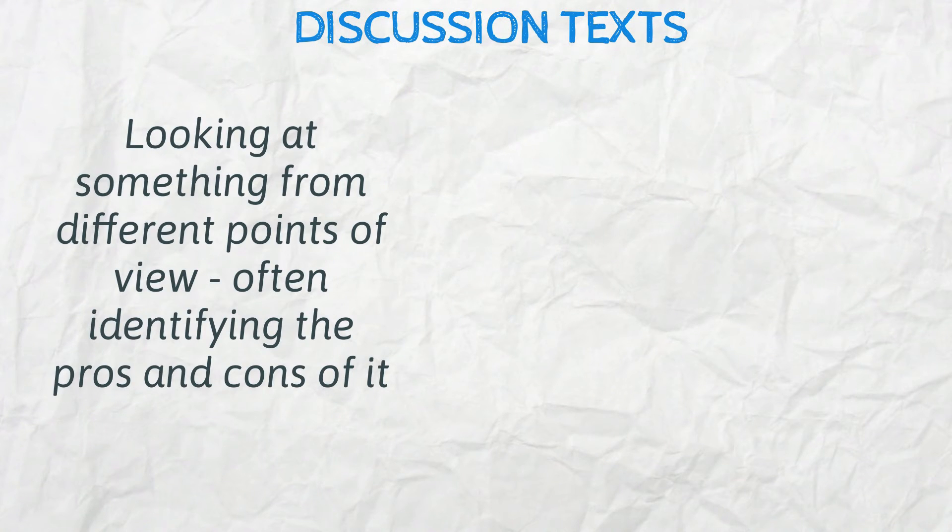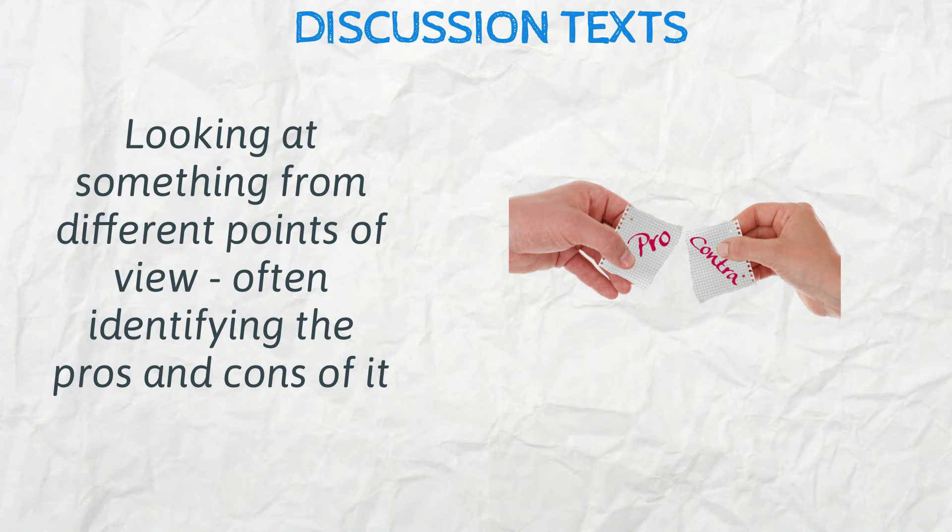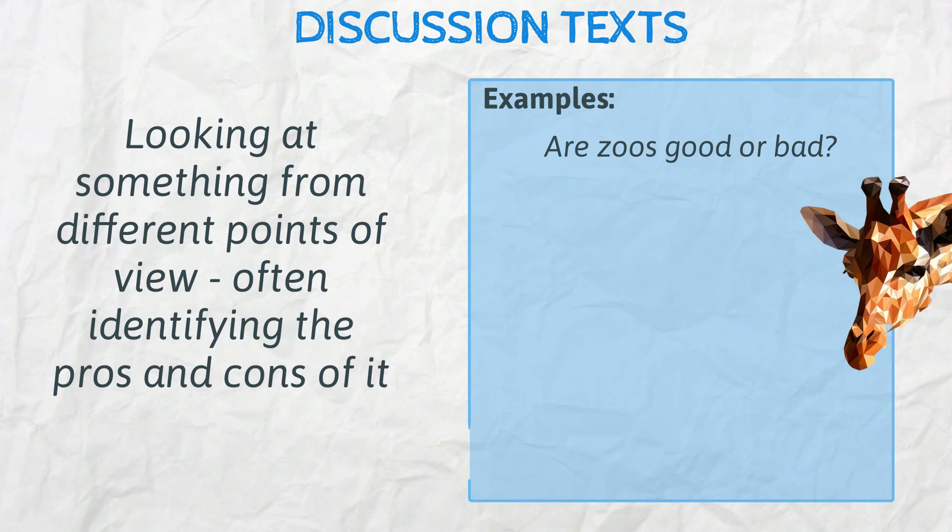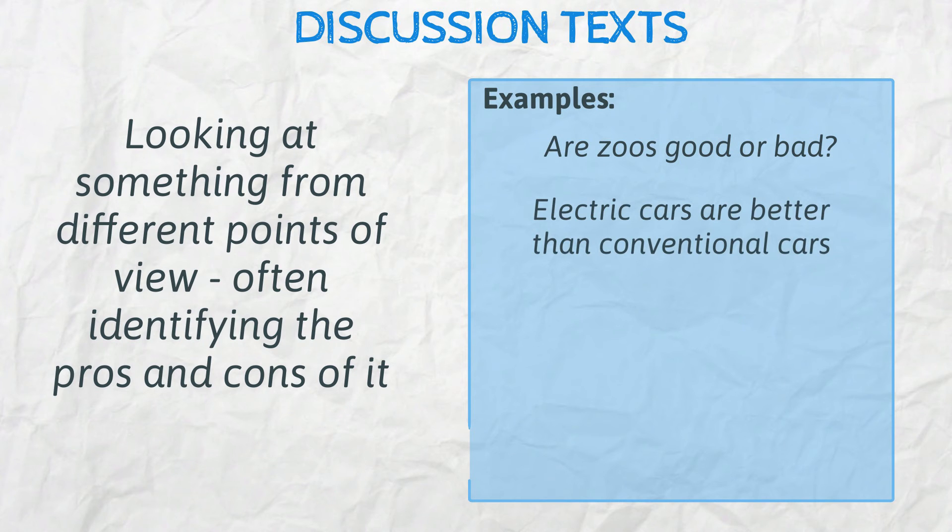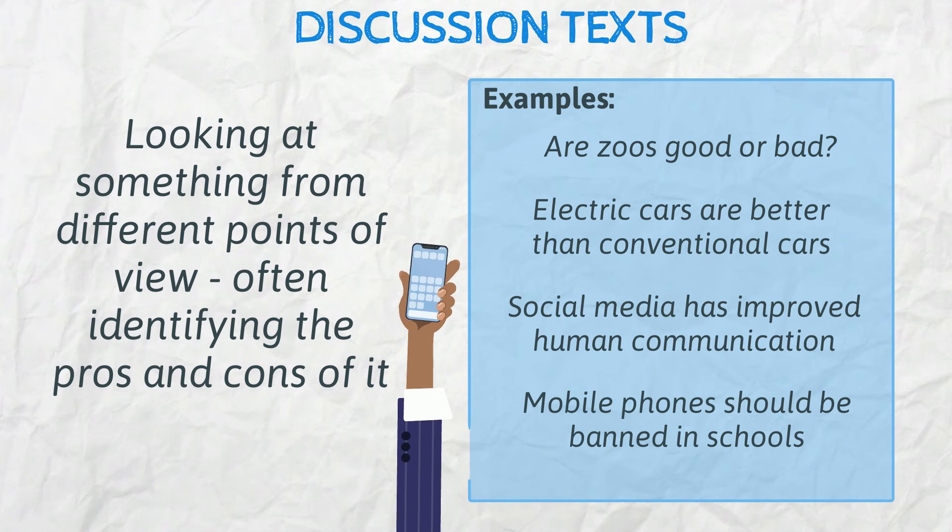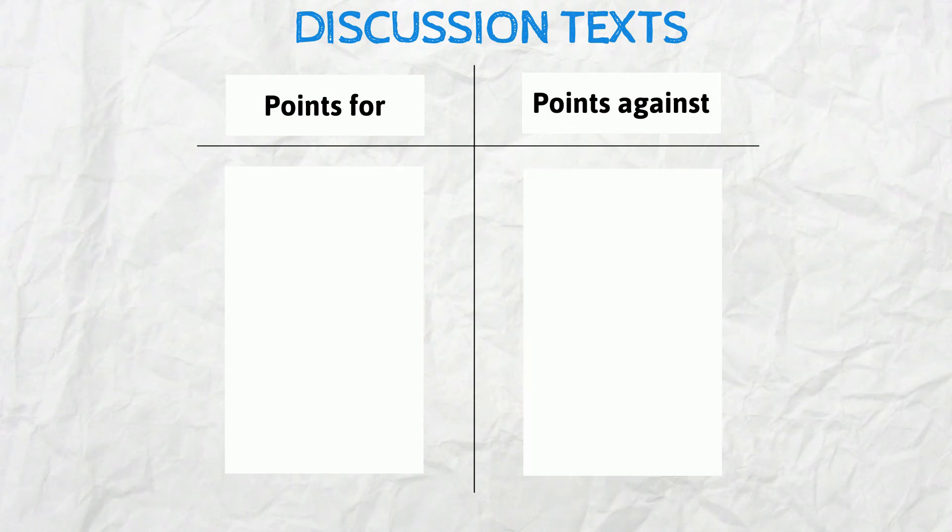Discussion texts. Discussion texts look at something from different points of view, often identifying the pros and cons of something. Example titles might be: Are zoos good or bad? Electric cars are better than conventional cars. Social media has improved human communication. Mobile phones should be banned in schools. When planning, it's worth putting your points into a table, with points for on one side and points against on the other.